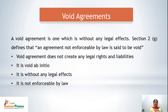All agreements may not be enforceable at law. Only those contracts which fulfill all the essentials of the Indian Contract Act 1872 under Section 10 are enforceable at law. Those that don't cover all the essentials may be Void Agreements. A Void Agreement is one which is without any legal effects. Section 2G of the Indian Contract Act 1872 defines that an agreement not enforceable by law is said to be void.